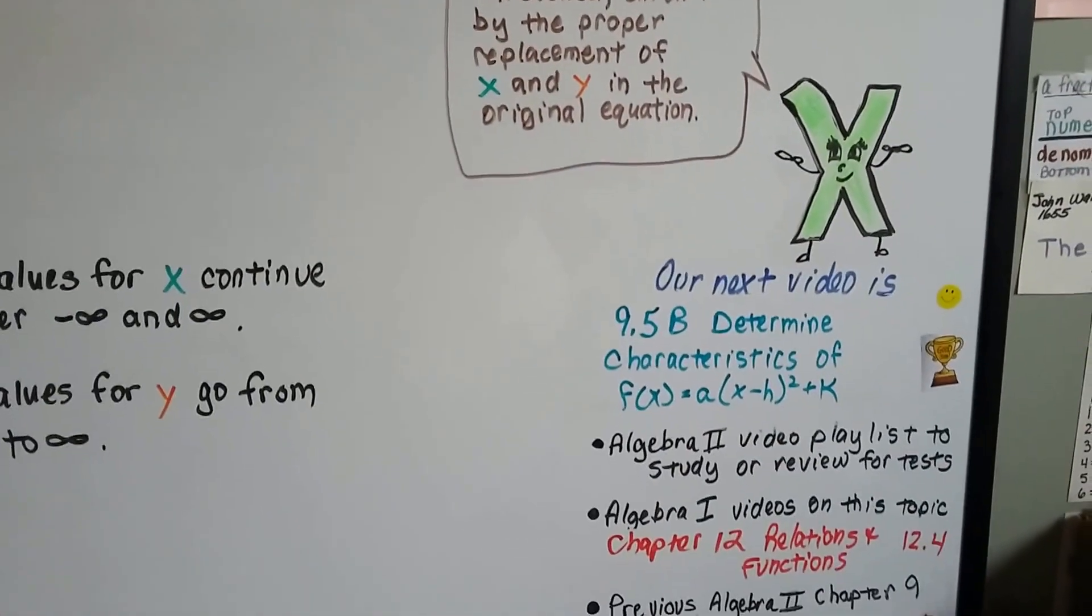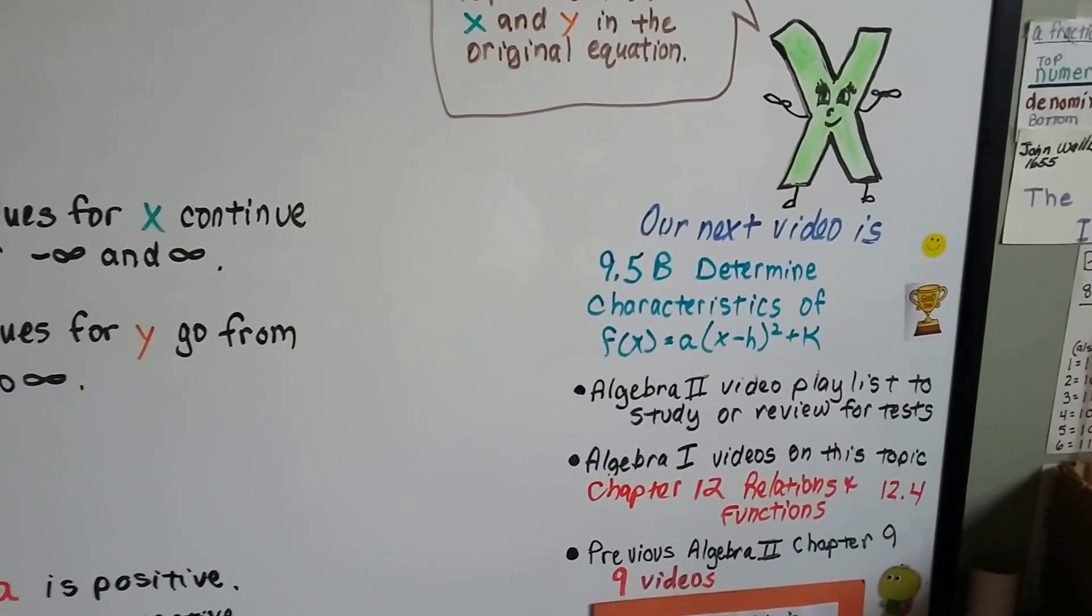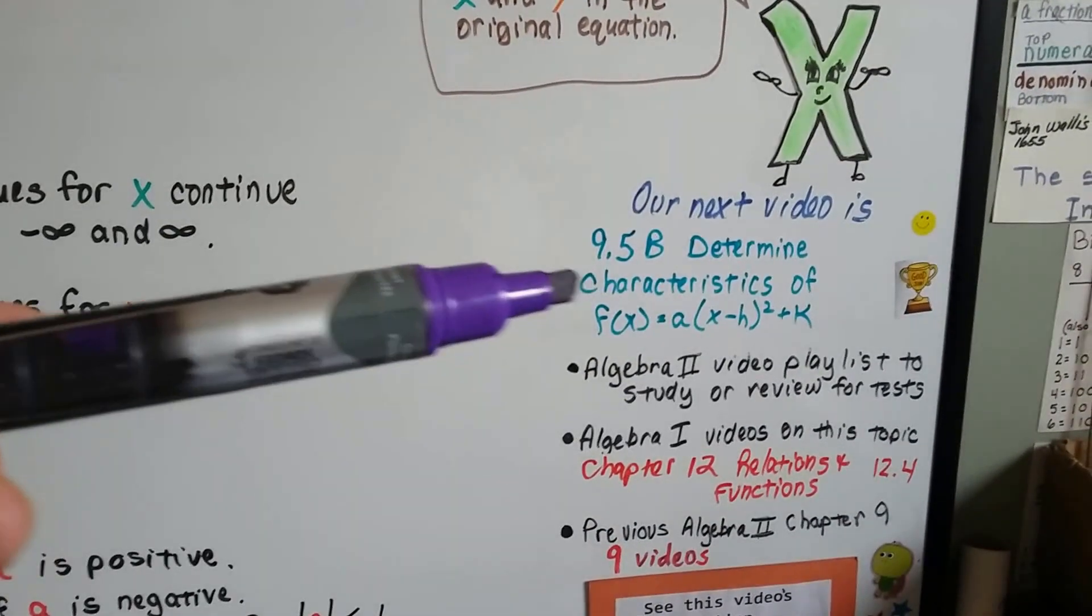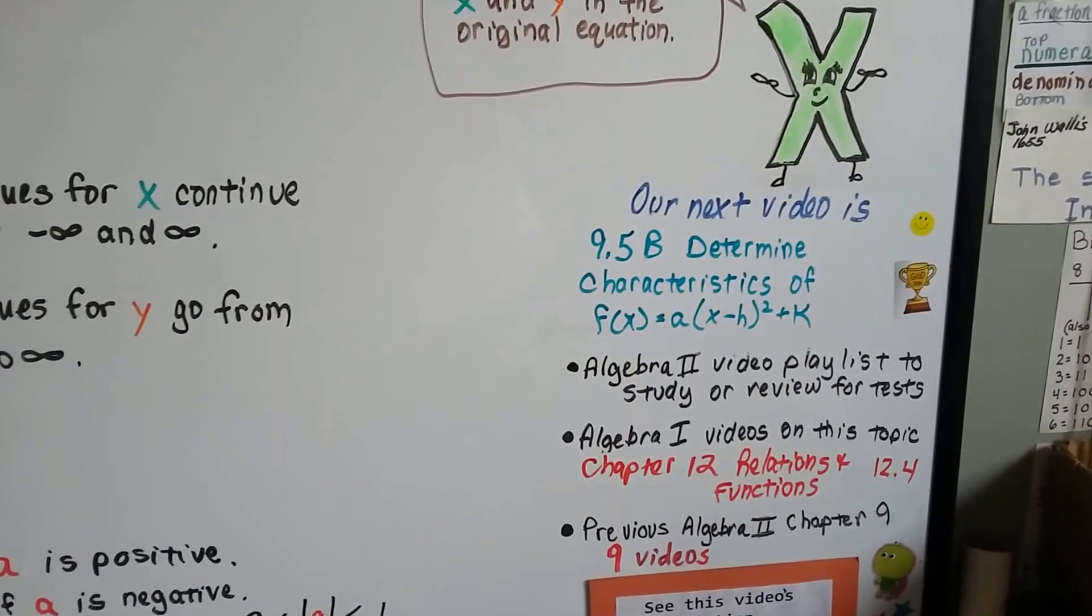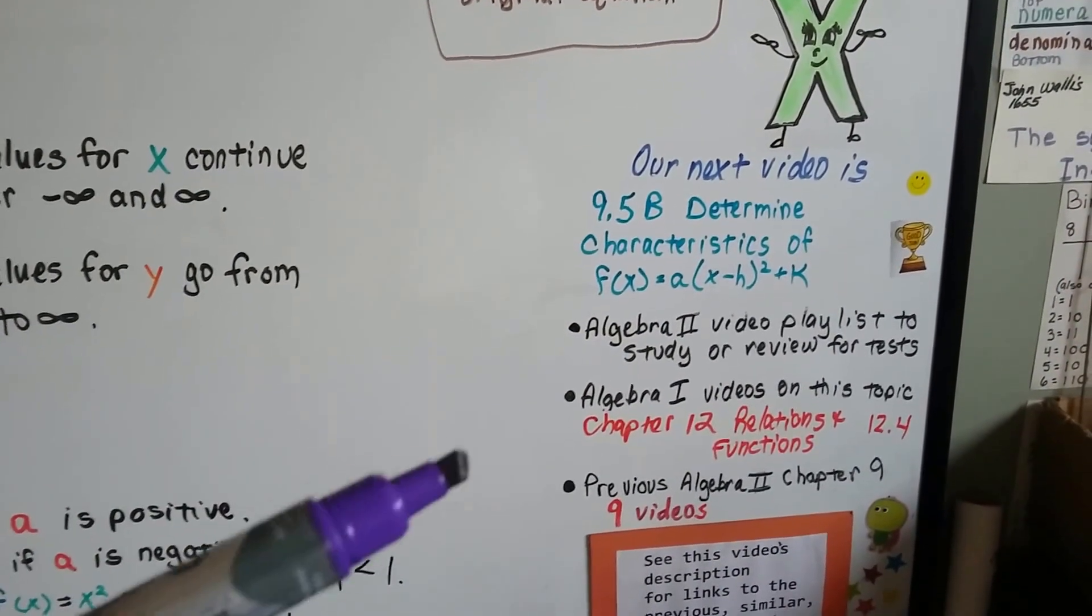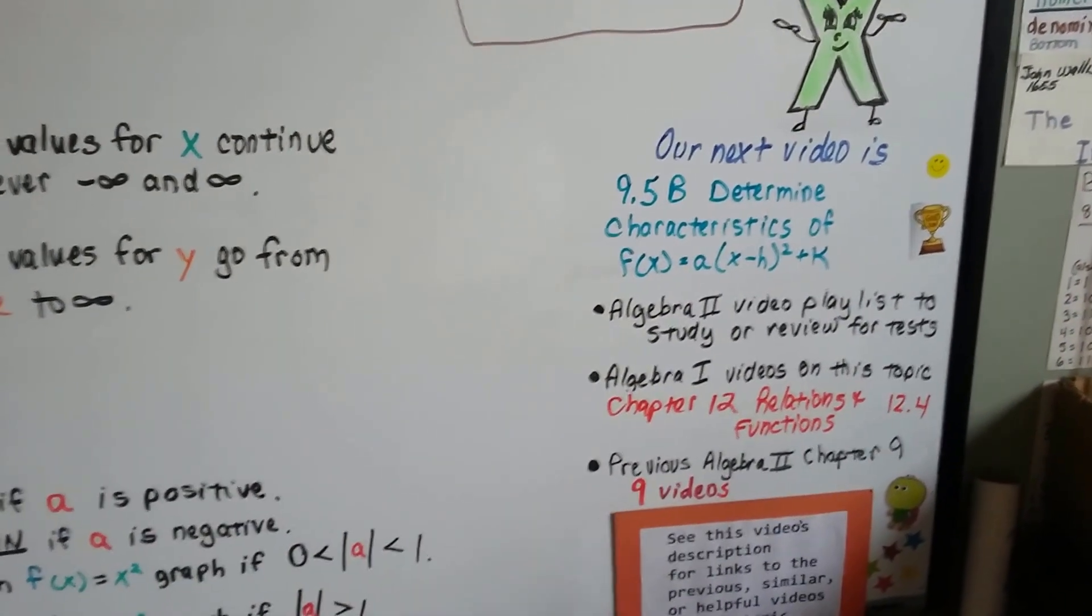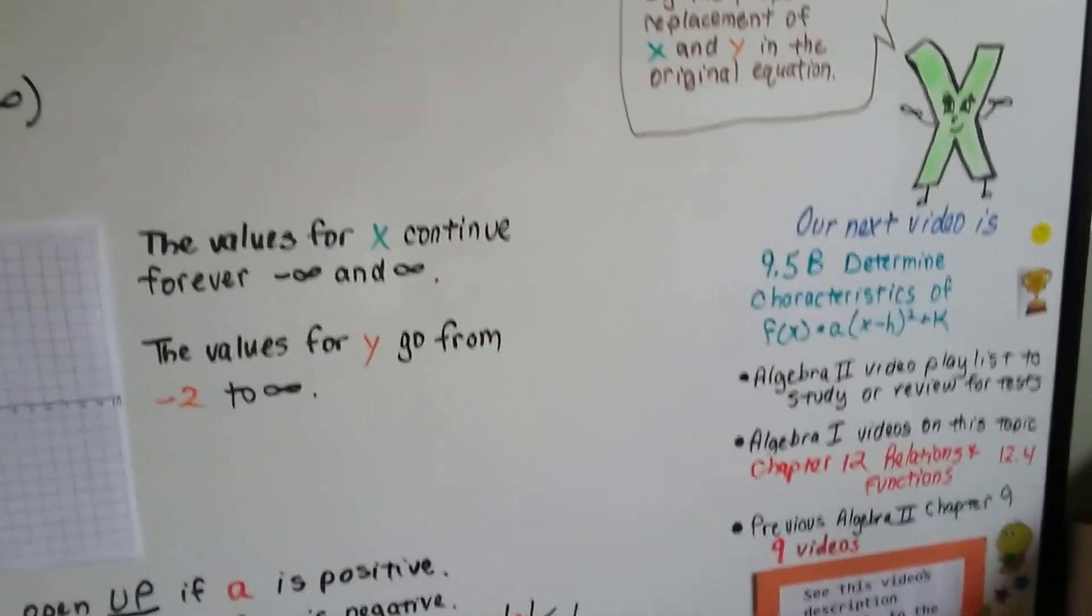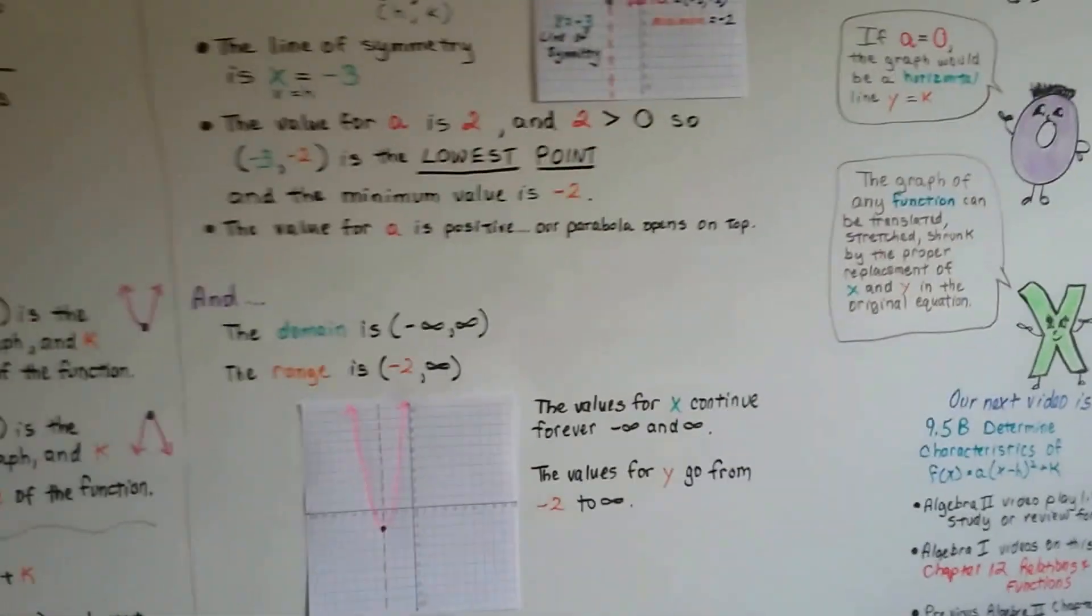Our next video is going to be 9.5b. We're going to determine different characteristics of the quadratic functions. I'm going to add this video to the Algebra 2 playlist. I'm going to have a link to Chapter 12 from last year from Algebra 1 that might help you out. And I will link to all those previous nine videos we've done for Chapter 9 so far.